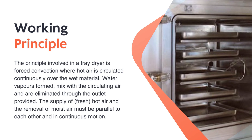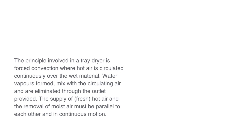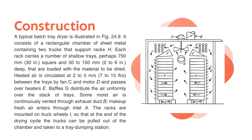Moving on with the construction of the tray dryer — a typical batch tray dryer is shown in the figure. Different alphabets are used to demonstrate every part. In the main rectangular unit, there is a metal sheet containing two trucks that support the racks, shown here with the alphabet H. Each rack consists of shallow trays.